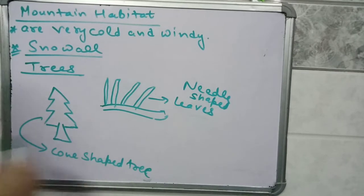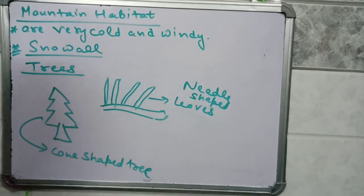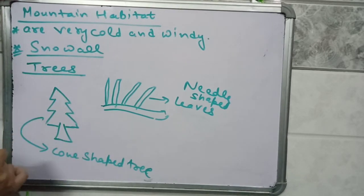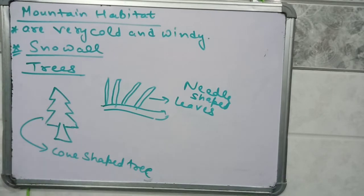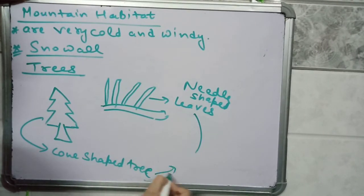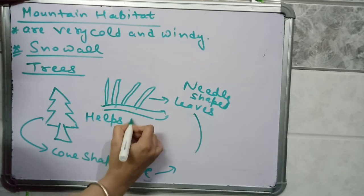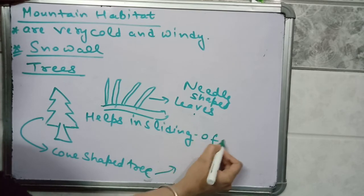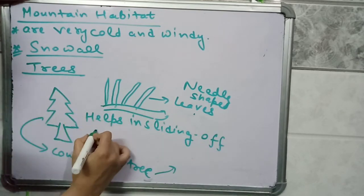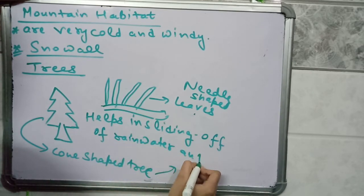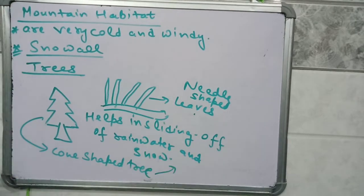Because of the cone shape, snow or rainwater slides off very easily. This cone shape and needle shape in a tree helps in sliding off rainwater and snow very easily from the tree.